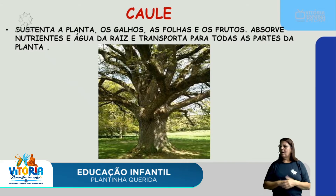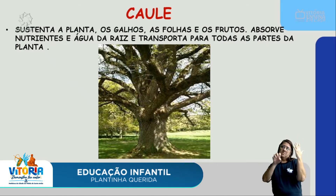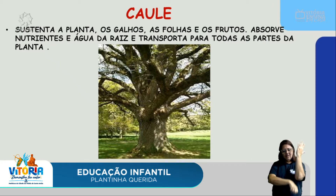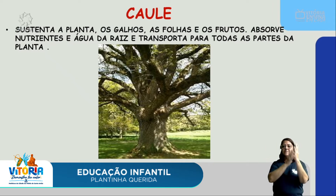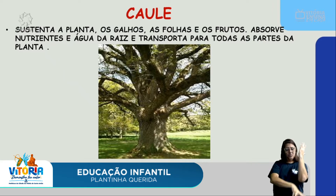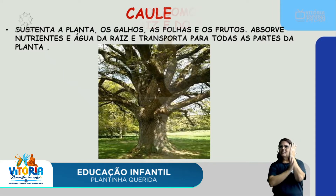Agora vamos falar um pouquinho do caule. O caule, ou tronco, sustenta a planta, os galhos, as folhas e os frutos. Absorve os nutrientes e a água da raiz e transporta para todas as partes da planta. Vejam aí o tronco, ele está segurando os galhos, as folhas e os frutos, e absorve da raiz os nutrientes e transporta para toda a planta.